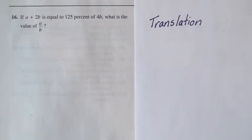Question 16 reads, if a plus 2b is equal to 125% of 4b, what is the value of a over b?